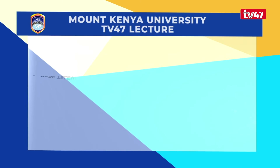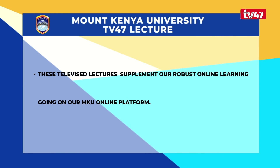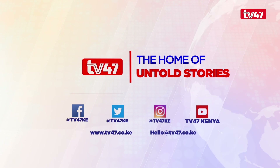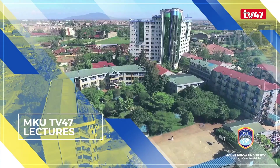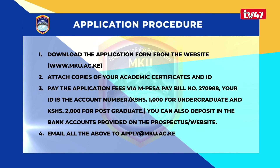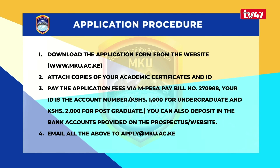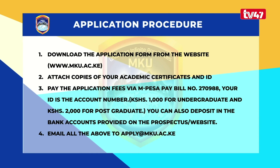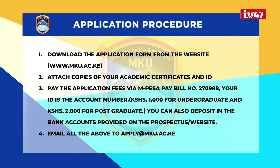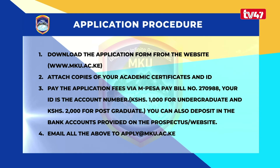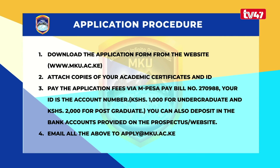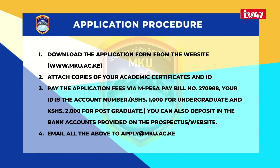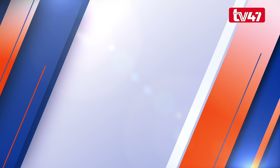These televised lectures supplement our robust online learning going on at our MKU online platform. You can view more of our televised lectures via our online platform. We are in a digital era, and Mount Kenya University knows this. To complete your online application: download the application form from www.mku.ac.ke, attach copies of your academic certificates and ID, pay the application fee via M-PESA paybill number 270988 — your ID is the account number, and 2,000 shillings is the charge for postgraduate. You can also deposit in the bank accounts provided on the website. Email all the above to apply@mku.ac.ke. Thank you.